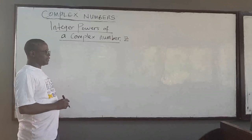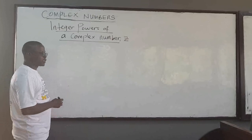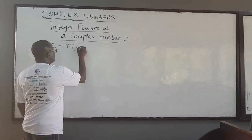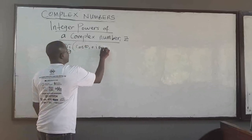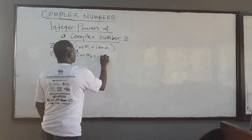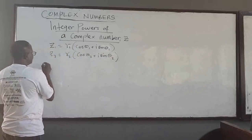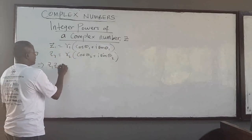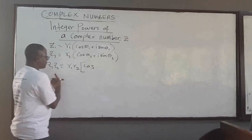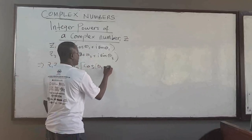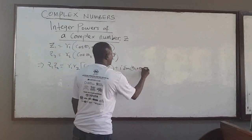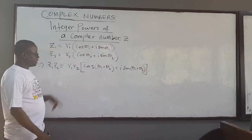In the previous lectures we learned that if you have two complex numbers and you multiply them — recall that if I have a complex number z₁ = r₁(cos θ₁ + i sin θ₁) and a second complex number z₂ = r₂(cos θ₂ + i sin θ₂) and I multiply them, you multiply the moduli r₁·r₂ and the argument of the product is the sum θ₁ + θ₂. So these are important results.